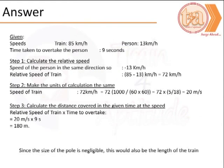Let us now solve the problem. What is given to us is that the speed of the train is 85 km per hour, the speed of the person is 13 km per hour, and both these are moving in the same direction. The time taken to overtake the person is 9 seconds.